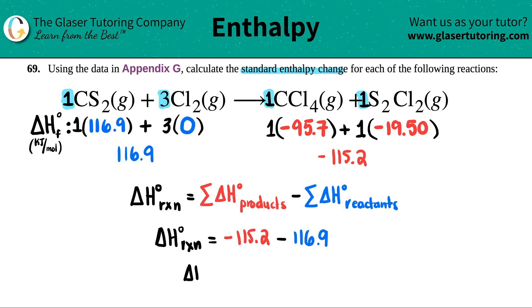All right, let's see. Delta H for the whole reaction is that number minus 116.9. I get negative, so it's exothermic, 232.1. And then just know that if you're using the tables or the appendix, kilojoule per mole is always the delta H unit. So this would be kilojoule per mole.